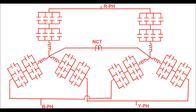The schematic diagram for the double star capacitor bank for 20 MVAR rating at 33 kV system voltage has been shown. In each phase of each star connection there exist eight capacitors, of which there are two series groups, and in each series group there are four capacitors connected in parallel. In each phase of each star connection there also exists a reactor, and between the neutral points of the two star connections there exists an NCT.